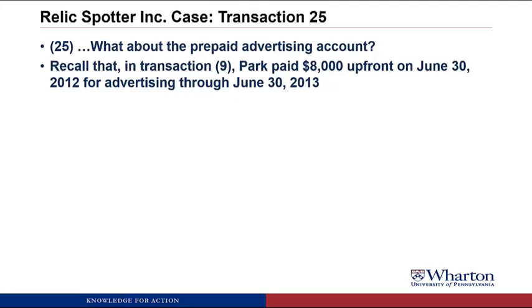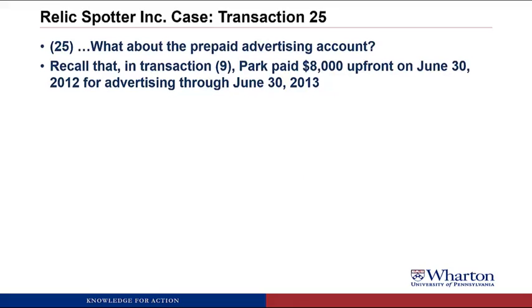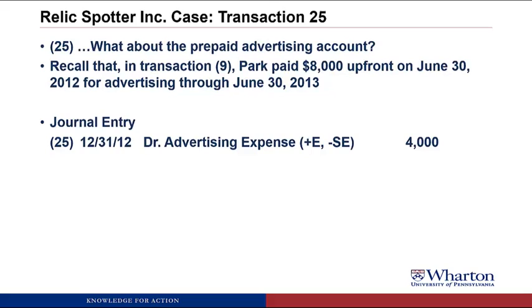Transaction 25. The accountant asked, what about the prepaid advertising account? Recall that in transaction number 9, Park paid $8,000 upfront on June 30, 2012 for advertising through June 30, 2013. We need an adjusting journal entry to recognize an expense for the six months of advertising that has been used up between June 30, 2012 and December 31, 2012. So we debit advertising expense to recognize the expense, and then we credit prepaid advertising to reduce the asset so that its balance now reflects how much is prepaid going forward.